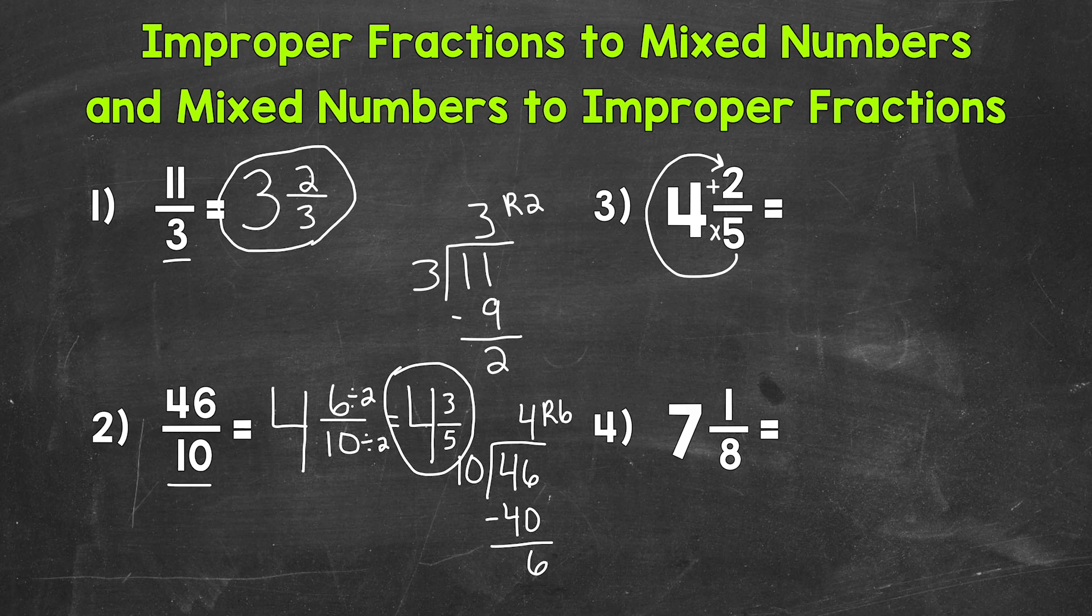So 5 times 4 is 20 plus 2 is 22. So that is our numerator. Again, we did 5 times 4 is 20 plus 2 is 22. We keep the denominator of 5 the same. So 22 fifths is our improper fraction.